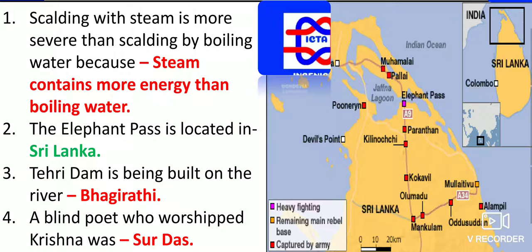The Elephant Pass is located in Sri Lanka. Tehri Dam is being built on the river Bhagirathi.